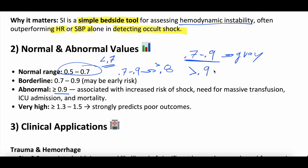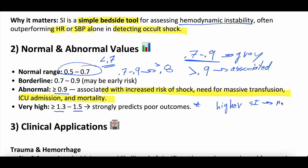If the shock index is greater than 0.9, this is associated with impending badness: future decompensation, need for massive transfusion, need for ICU admission, even mortality. A shock index of 0.9 is correlated with all of these things. Very high shock index — greater than 1.3 or 1.5 — is certainly associated with really poor outcomes. The higher the shock index, the more concerned you should be. For example, someone with a systolic blood pressure of 60 and heart rate of 120 gives a shock index of two — we don't need the shock index to know that patient is critically ill.